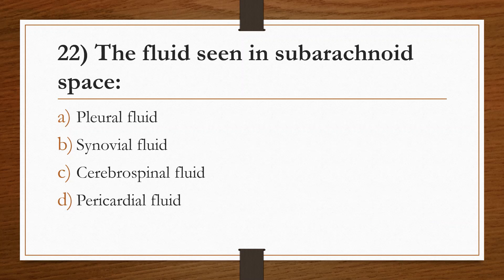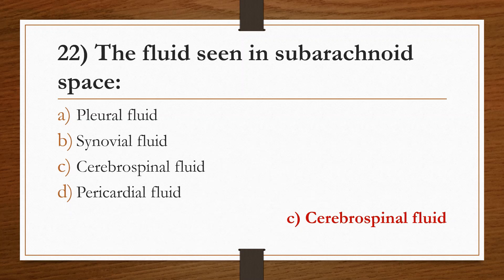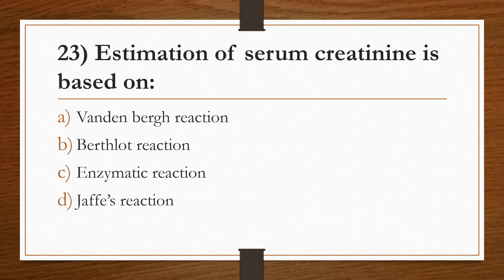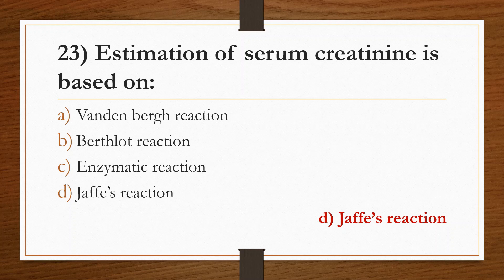Twenty-second question: the fluid seen in the subarachnoid space. Option A: pleural fluid. Option B: synovial fluid. Option C: cerebrospinal fluid. Option D: pericardial fluid. Answer is Option C, cerebrospinal fluid. Twenty-third question: estimation of serum creatinine is based on Option A: Vandenberg reaction. Option B: Biuret reaction. Option C: enzymatic reaction. Option D: Jaffe's reaction. Answer is Option D, Jaffe's reaction.